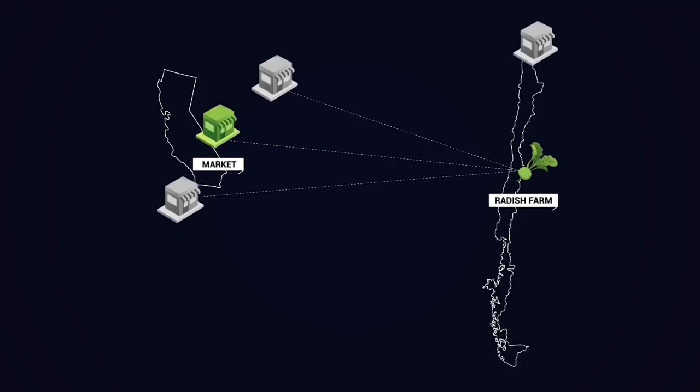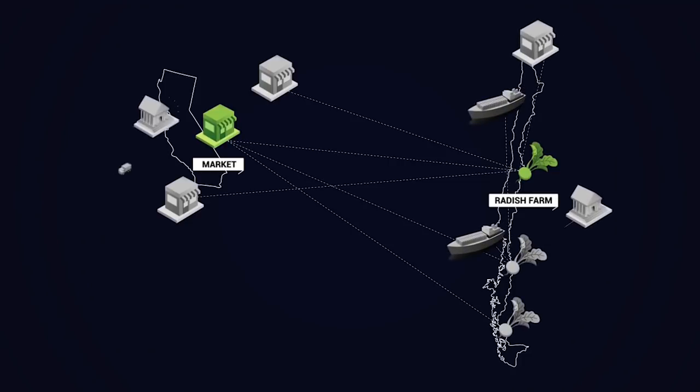You and I are on a blockchain network that supports transactions between various markets, growers, shippers, banks, and others. Say I agree to sell you my radishes at a special low price, but I need the other markets that buy from me to continue buying at the standard price.